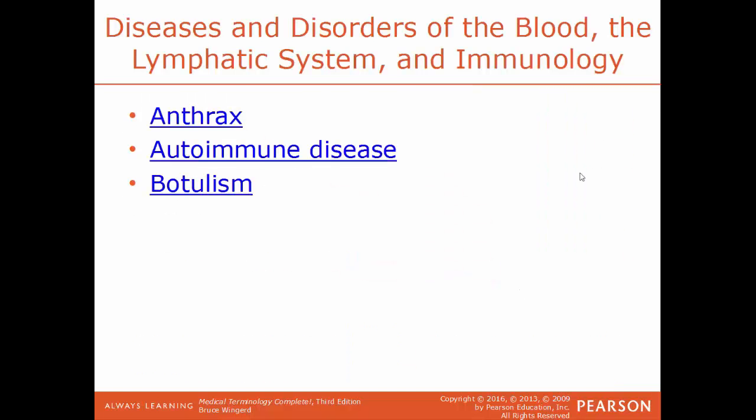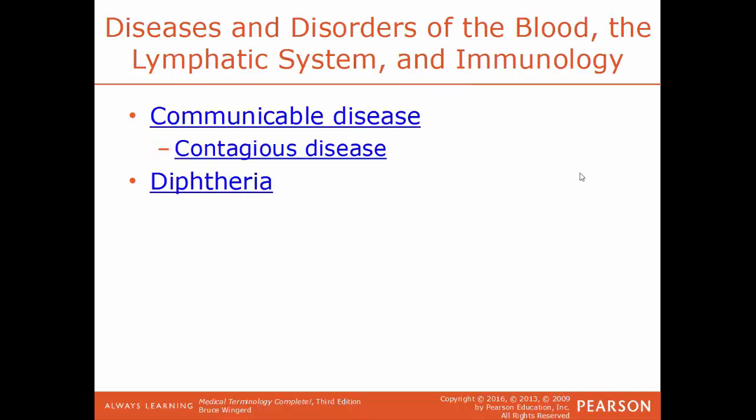Anthrax is a severe bacterial infection found in animals that can be transmitted to humans, causing ulcerations in the skin and potentially leading to a type of pneumonia. Autoimmune disease is a generic term for any condition where the immune system attacks the body's own healthy cells, mistaking them for foreign pathogens. Botulism is food poisoning caused by botulinum bacteria, leading to nausea, vomiting, blurred vision, and even paralysis.